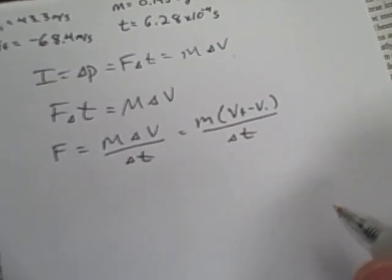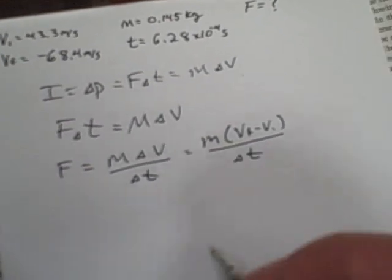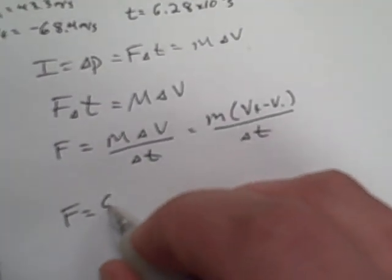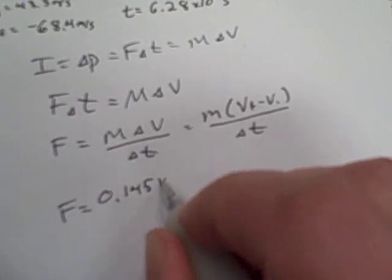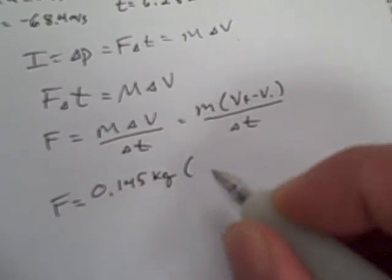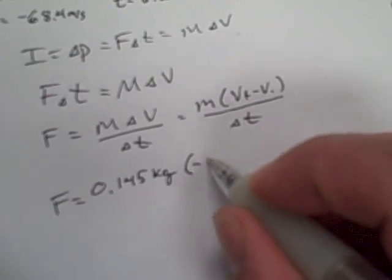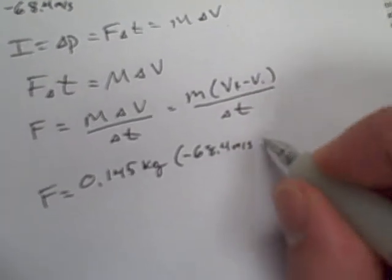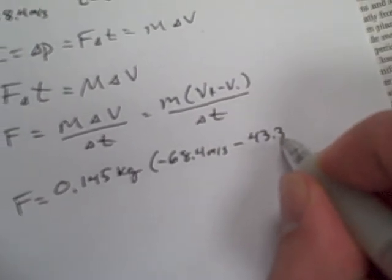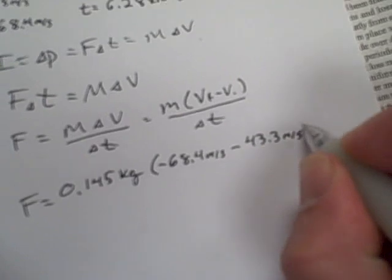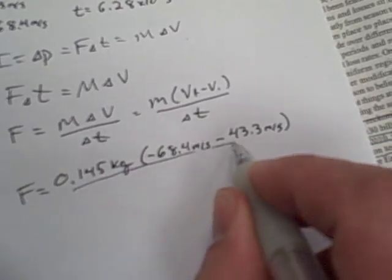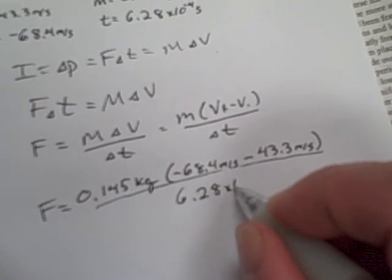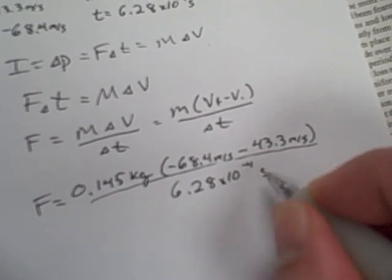From this point, we can plug in our values that we were given. We have force is going to equal 0.145 kilograms times the quantity, final velocity negative 68.4 meters per second minus 43.3 meters per second, all over the change in time, which was 6.28 times 10 to the negative 4 seconds.